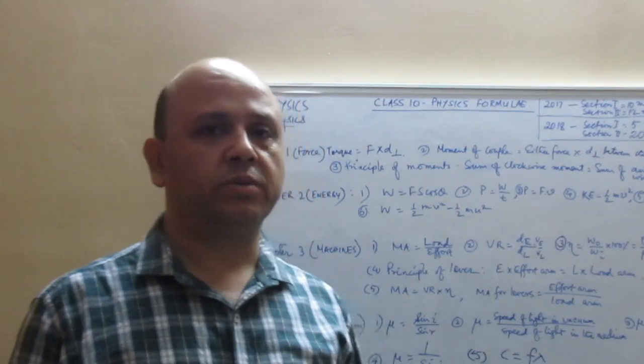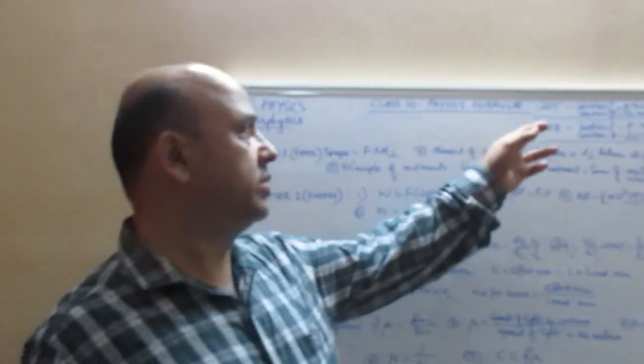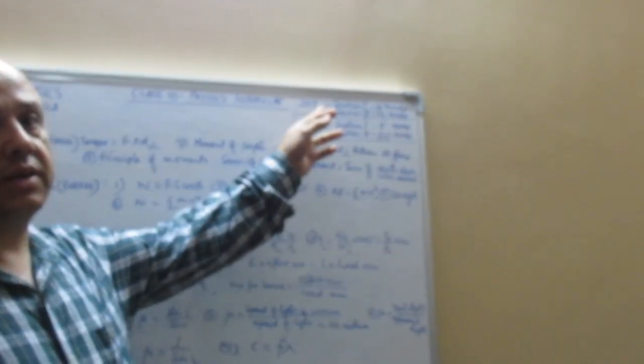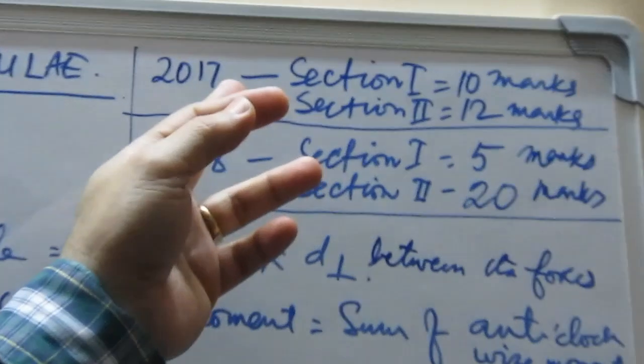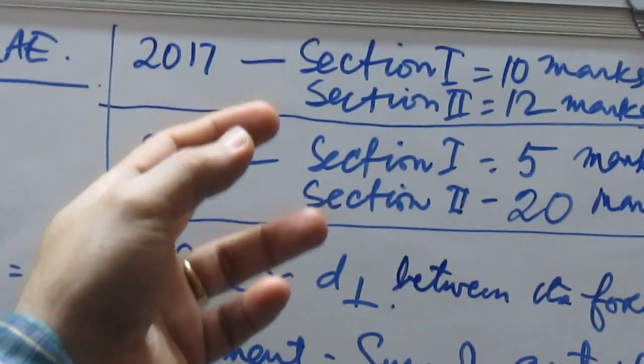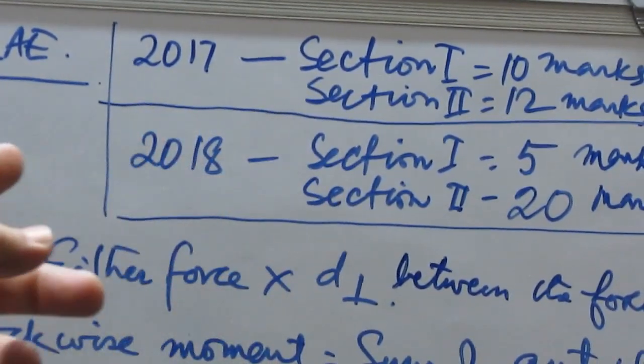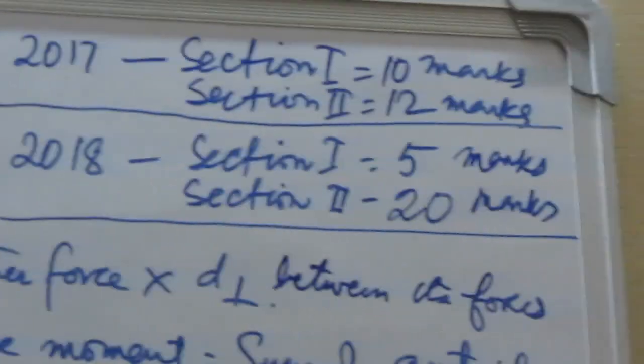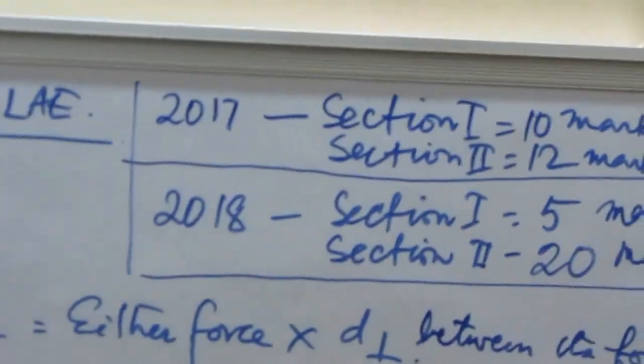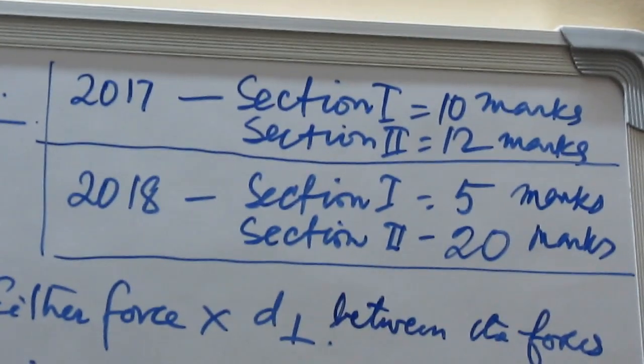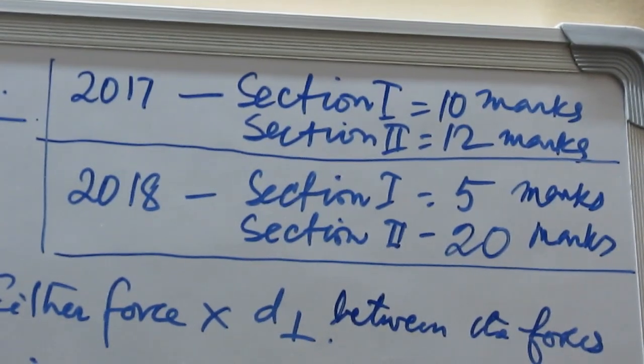So, come here. In 2017, we are looking at the ICC exam. In section 1, there were 10 marks, and in section 2, there were 12 marks. So we can see that there were 22 marks in 2017.